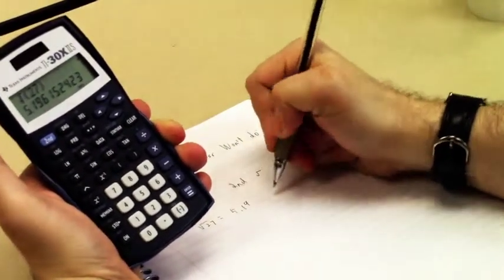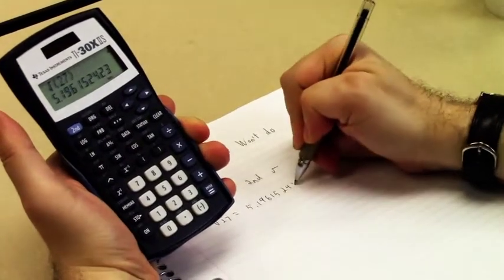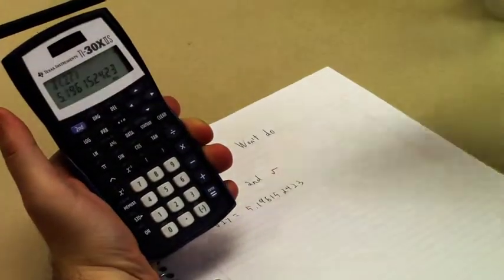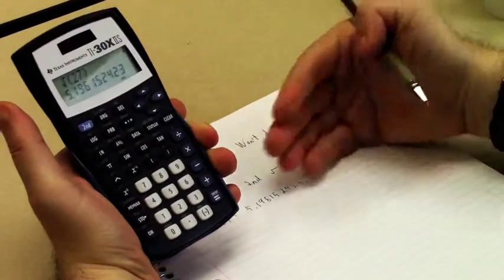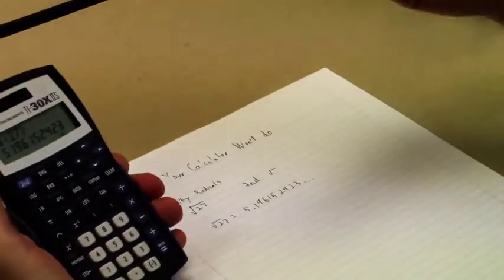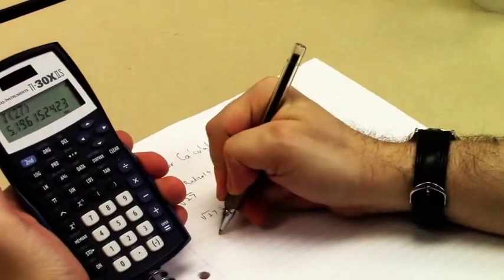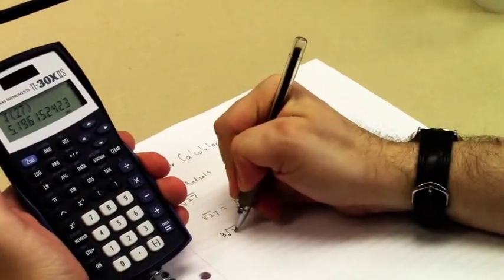But it is going to give you a decimal approximation. It's not going to give you the simplified radical that you're looking for. The truth of the matter is there isn't really a way to do that on this particular calculator. If you want a calculator that does simplify radicals, for example, in this case, 27 would simplify down to 3 square root of 3.